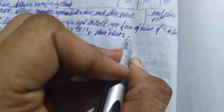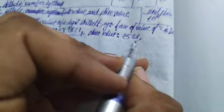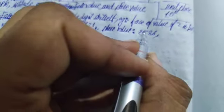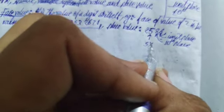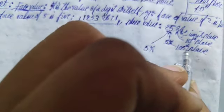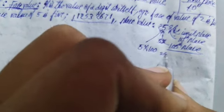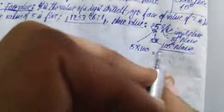Let's assume we have the number 2586. Suppose I need to find the place value of 5. In that case, the face value of 5 is 5, and this 5 is at the 100th place. So to find its place value, you need to multiply the face value — that is 5 — with its position, which is 100.